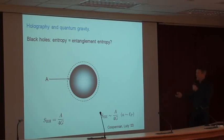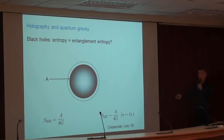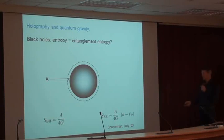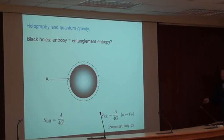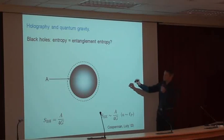There is a very interesting and tantalizing similarity between black hole entropy, which is A over 4G, and entanglement entropy, which also scales like area over cutoff. In particular, if you do the following computation — you take a black hole...